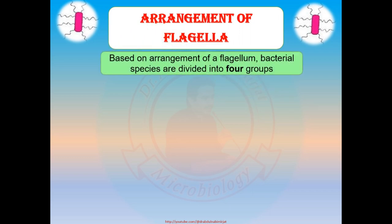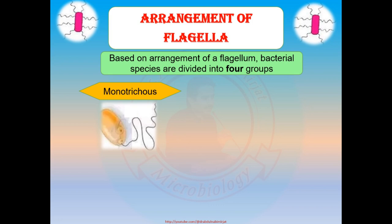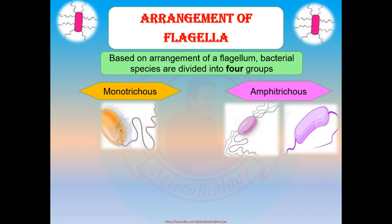Arrangement of flagella: based on arrangement, bacterial species are divided into four major groups. Monotrichus — bacteria having only a single flagellum, for example Vibrio cholerae. Amphitrichus — bacteria showing a tuft of flagella at both ends or poles, or even a single flagellum at both poles. Examples include Alcaligenes faecalis, Nitrosomonas species, and Campylobacter jejuni.